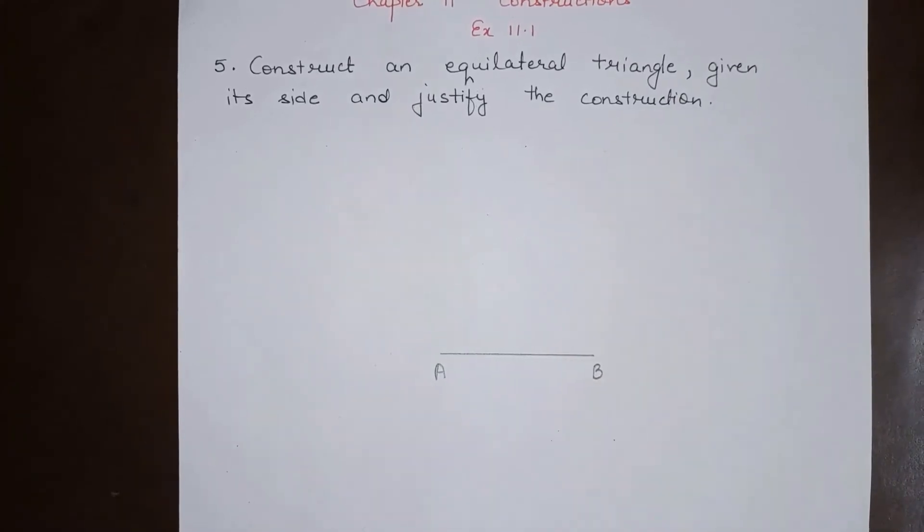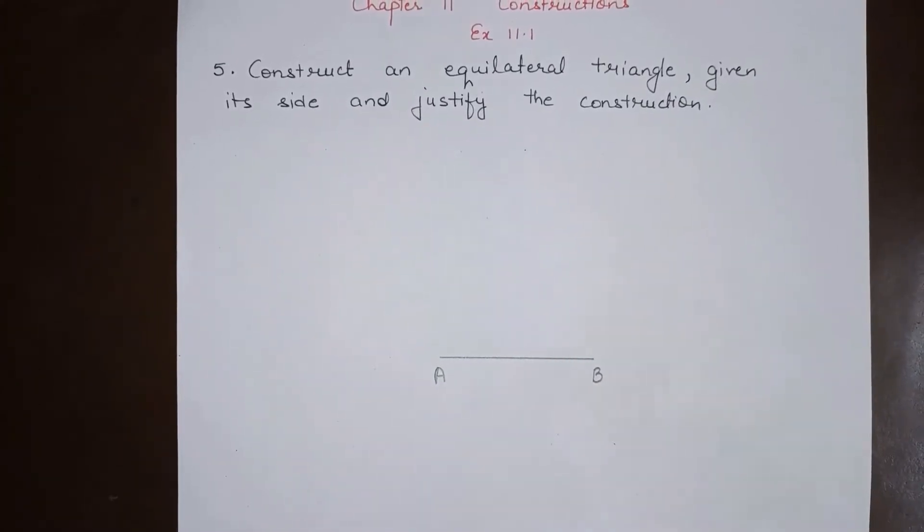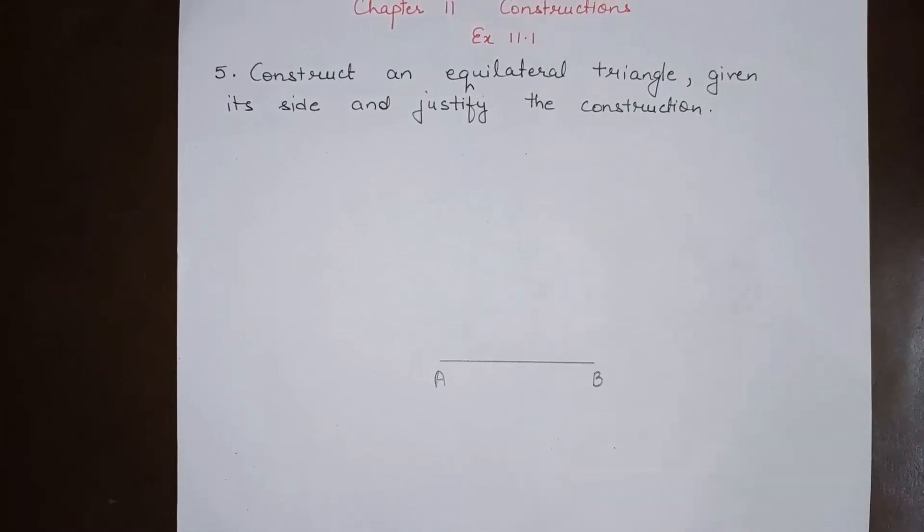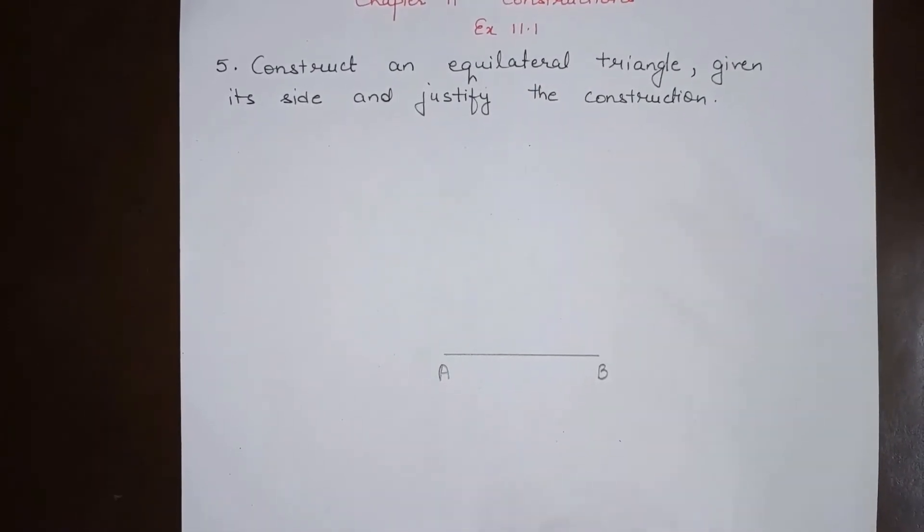I will draw this line segment and let this be AB. Let me draw it of any length. Now we are talking about equilateral triangle, so we know that in equilateral triangle each angle is of 60 degree.